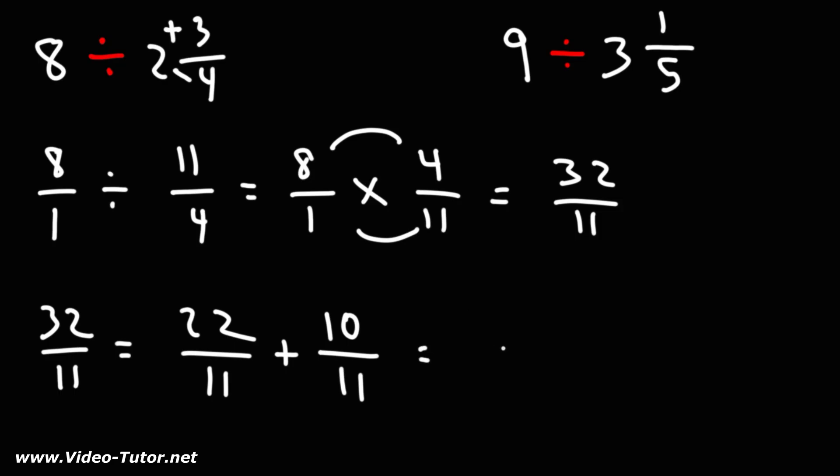22 divided by 11 is 2. You can write a whole number plus a fraction as a mixed number. So 2 plus 10 over 11 is the same as 2 and 10 over 11. That's the answer.